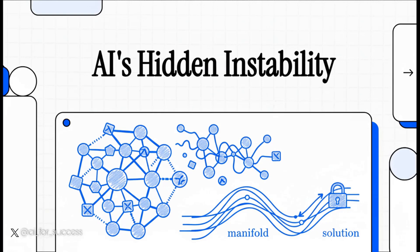Today we're going to dive into a really fascinating paper that gets right to the heart of a hidden instability in how we build these massive AI models. It's called MHC, Manifold Constraint Hyperconnections, and it offers up a pretty elegant fix to a really risky problem.